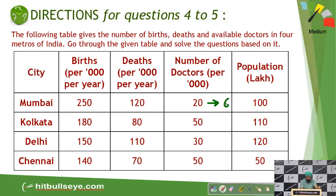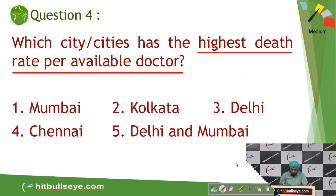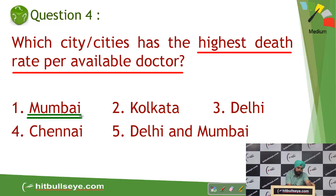For the other cities: 80 deaths by 50 doctors is less than two; 130 by 30 is less than four; and 70 by 50 is again less than two. Since we need the maximum, it happens for Mumbai which gives six. So Mumbai becomes our answer.